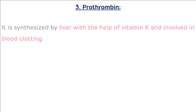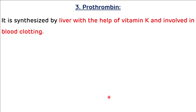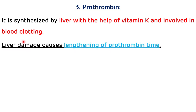Another example of alpha 1 globulin is prothrombin. It is synthesized by the liver with the help of vitamin K and is involved in blood clotting. Liver damage causes lengthening of prothrombin time (PT time).